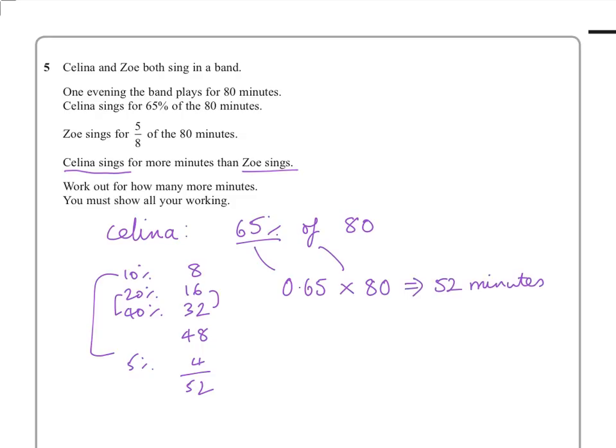Now, if we look at Zoe now, she sings for 5 eighths of the 80 minutes. Now, there are a couple of ways you can have a look at that, with or without a calculator. You can do 5 times the 80, which is 400, and then divide it by the 8, and that will give you 50.